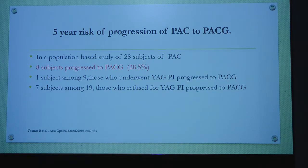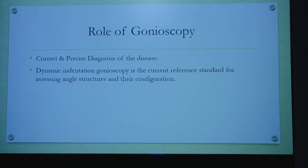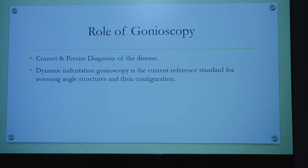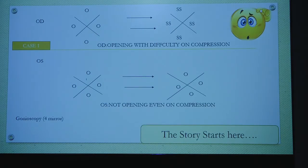As shown by the study done by Thomas et al., even if peripheral iridotomies (PIs) have been done in cases of primary angle closure, they tend to progress to PACG. That means timely intervention and evaluation — even after performing a PI — is really required. The role of gonioscopy is basically the correct and precise diagnosis of the disease, along with dynamic indentation gonioscopy, which is the current reference standard for assessing angle structures and configuration. Let's see some common case scenarios where gonioscopy helps us and where newer modalities coming into picture can aid further diagnosis.